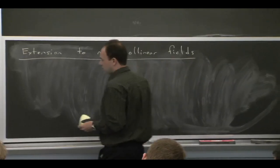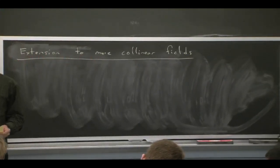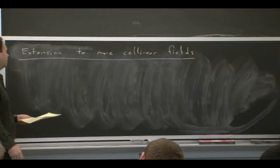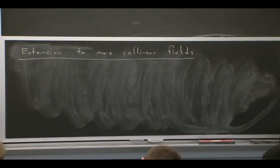So we would have, in this case, more than one energetic hadron, more than one energetic jet. So far, we've been talking about one energetic hadron or one energetic jet. What if we have two jets? Then we would need two types of collinear field, one for each of those jets.